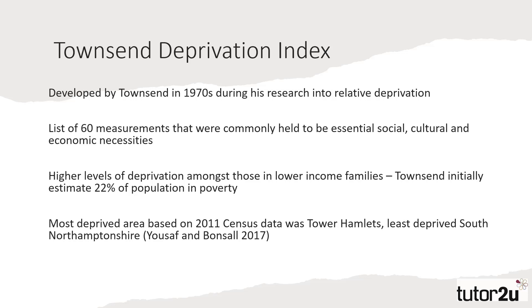The measure often used by sociologists and social researchers when examining poverty is the Townsend Deprivation Index. Based upon Townsend's original research in 1979, it comprises a list of over 60 measurements that are commonly held to be essential social, cultural and economic activities. From these 60, Townsend selected 12 activities and scored respondents based upon whether they engaged in the activity or owned a good. This provided a quantitative overview of levels of deprivation across three cities in its initial research, but has been expanded in the 21st century.